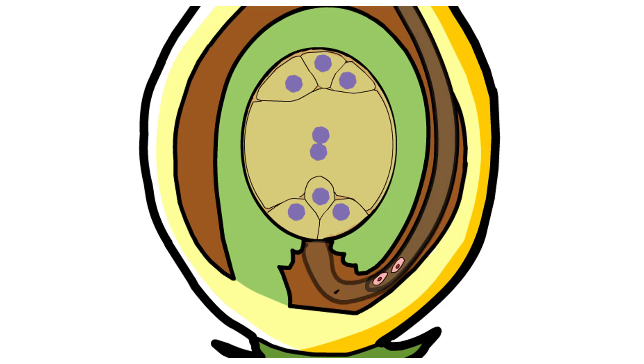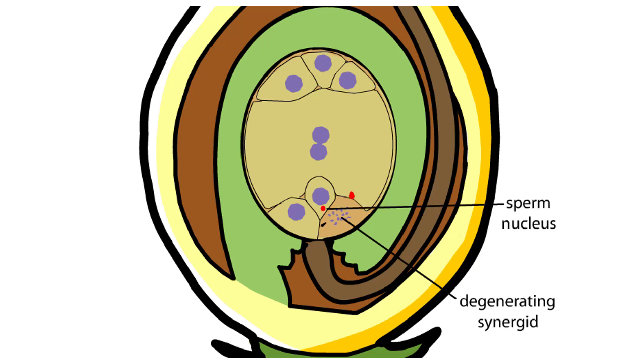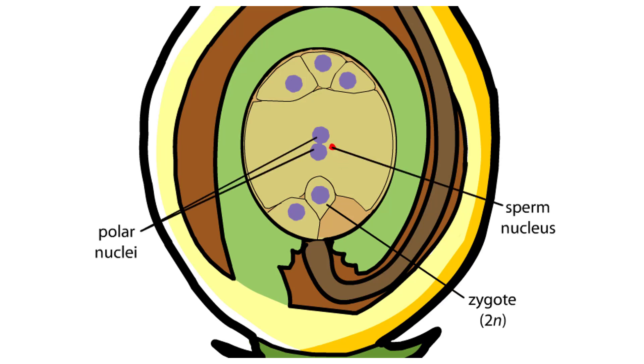The pollen tube reaches the micropyle of the ovule and digests its way into one of the synergids, releasing the sperm cells. The synergid degenerates as one sperm cell fertilizes the egg, producing a diploid zygote. The second sperm cell fuses with both polar nuclei, producing a triploid cell.